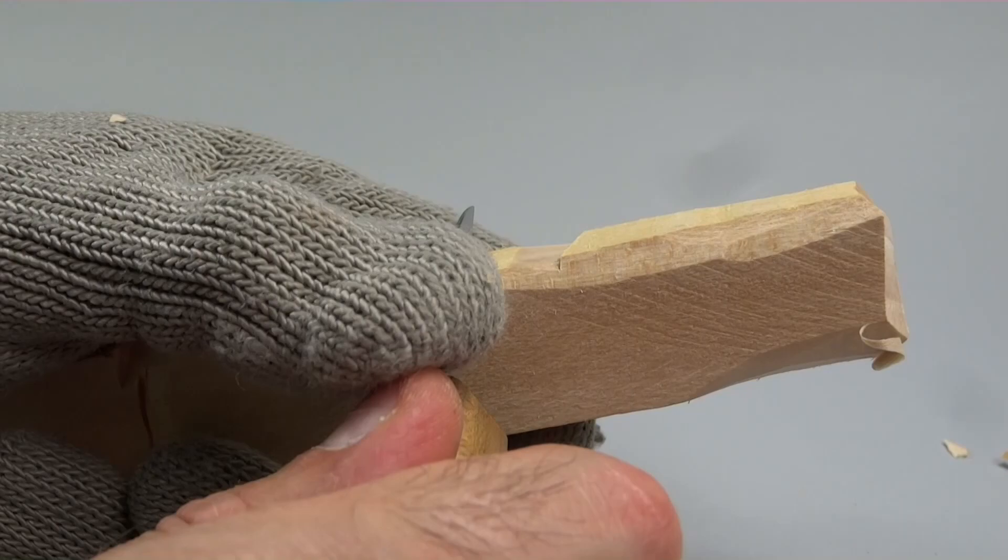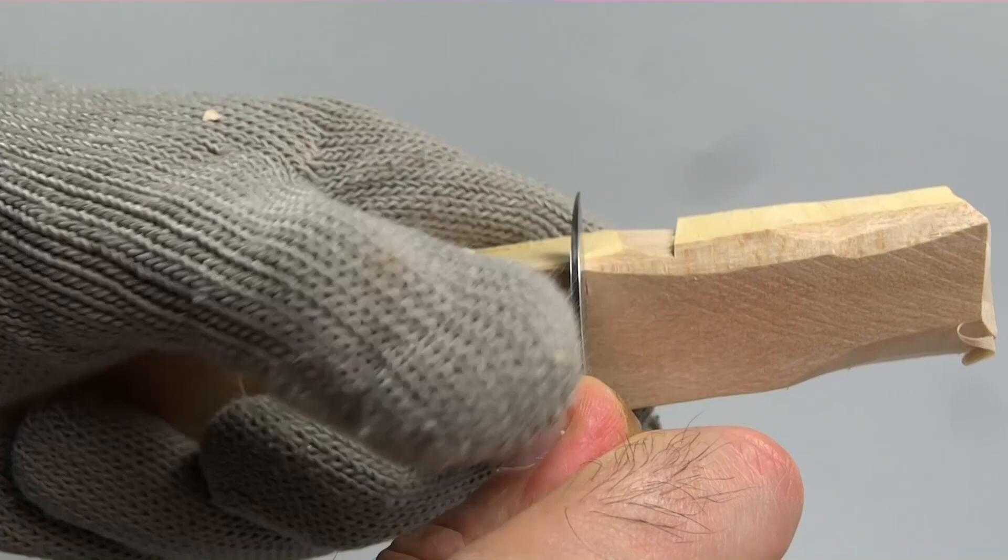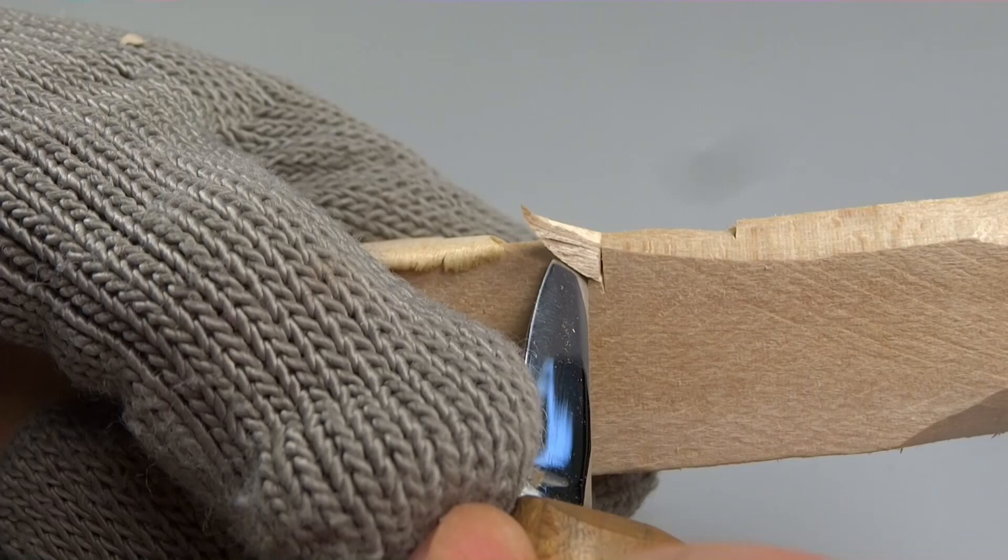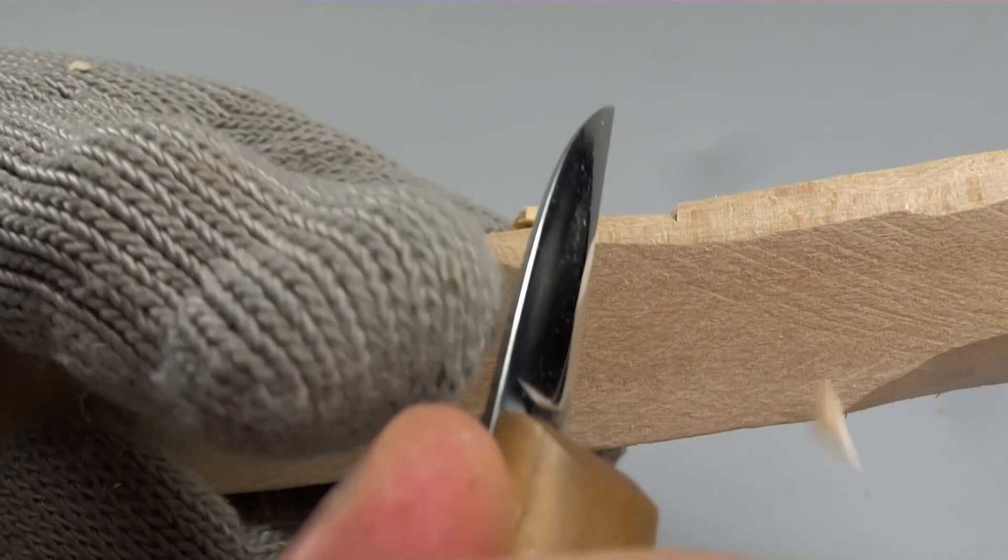Let's do a stop cut on the corner. Again, press the knife in, take the knife. See how I cut the fibers. Take my knife, use a push cut, gently go into that cut. If it doesn't break all the way, just go back and repeat it.